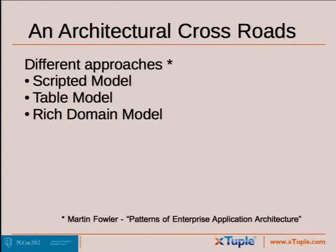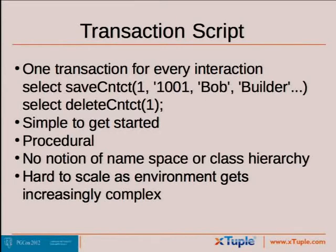Martin Fowler has a great book called Patterns of Enterprise Application Architecture, and I'm pulling out a bit that was useful for framing our thoughts about this change. He describes three different approaches to building large enterprise-style applications: a transaction script model, a table module, and a rich domain model. In a transaction script model, just about everything is a basic SQL call or SQL transaction. We have functions in our database called save contact and delete contact — over a thousand functions like this.